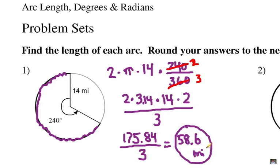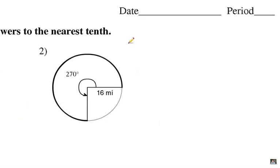Alright, let's try number two. Alright, do you remember the formula? Yes, we're going to take the entire circumference, so that's going to be 2 times π times the radius, 2πr. The radius in this case is 16 miles. And we're going to multiply it by the part of the circle we're talking about, which is 270 over 360.